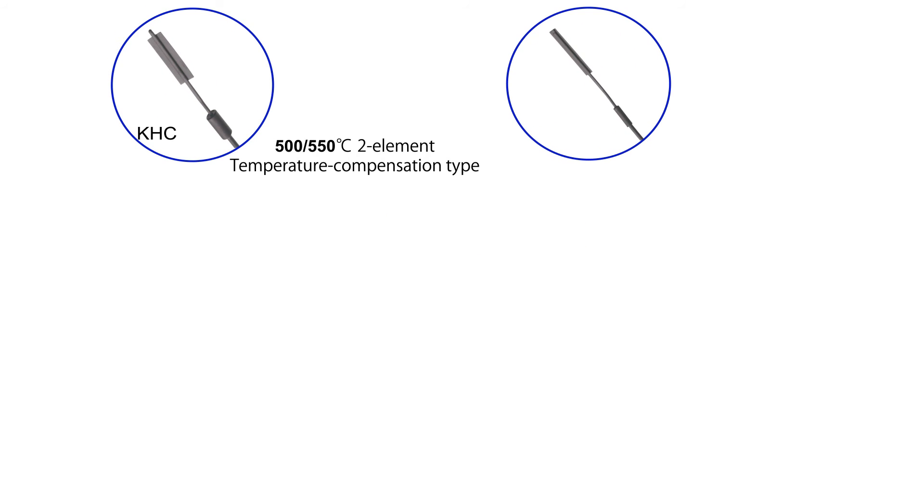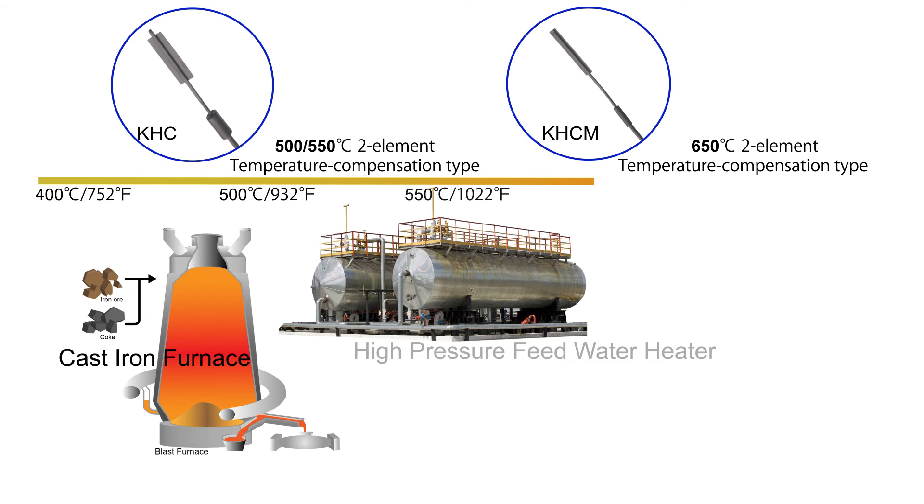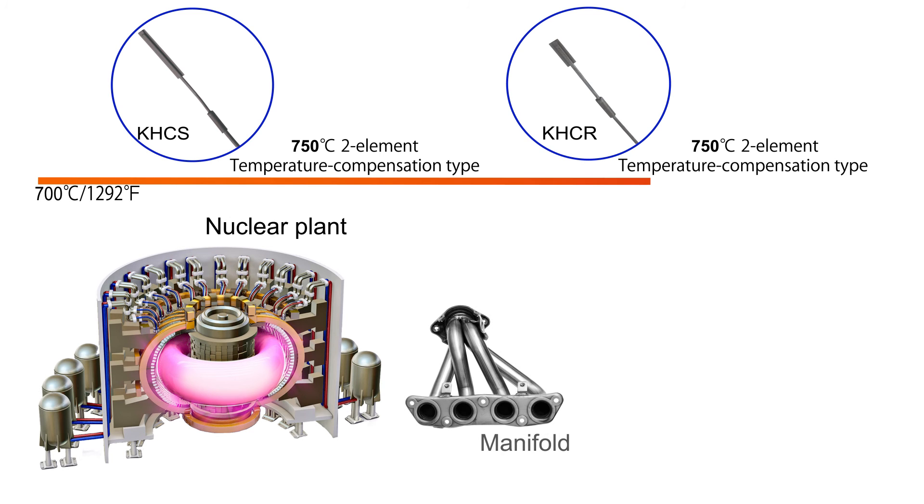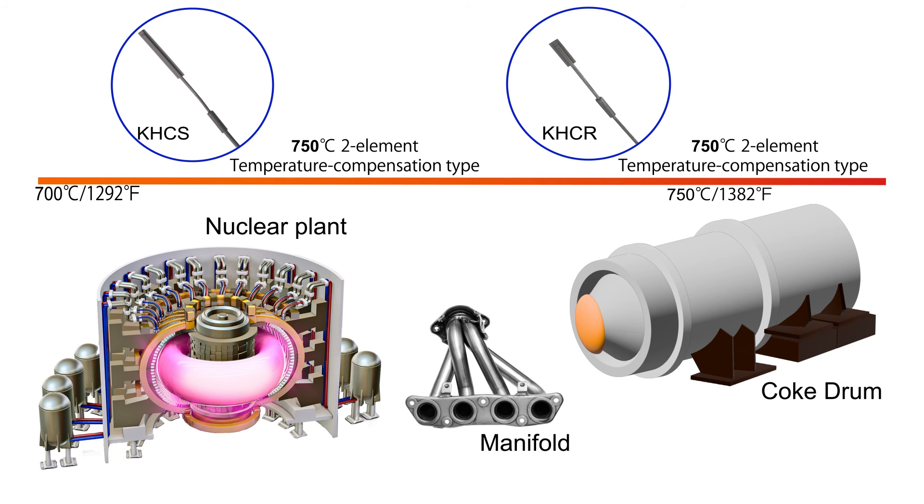The gauge models in this range are optimized for applications in certain temperature ranges. KHC and KHCM are perfect for applications up to 650 degrees Celsius. 750 degrees is normal for these applications shown. Our models KHCS and KHCR work well in this range.